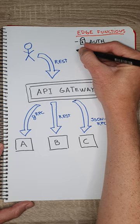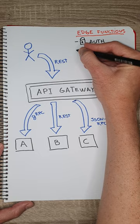It can also execute other functions like authentication and authorization, rate limiting, telemetry, caching, and request logging.